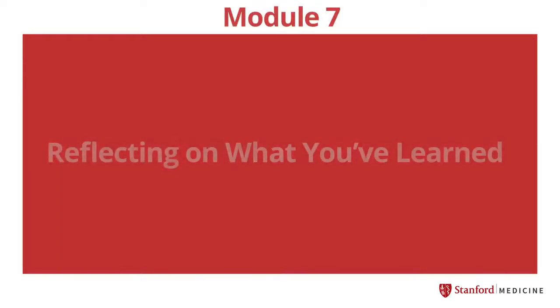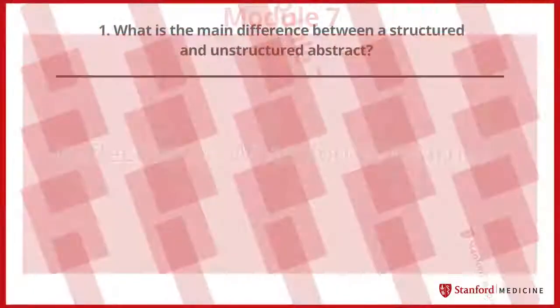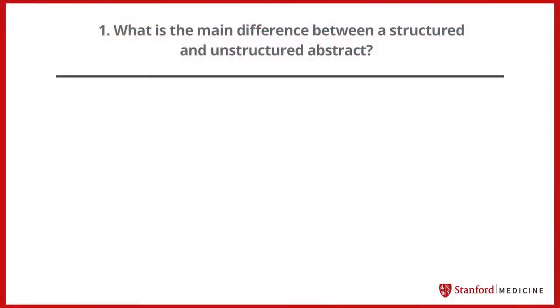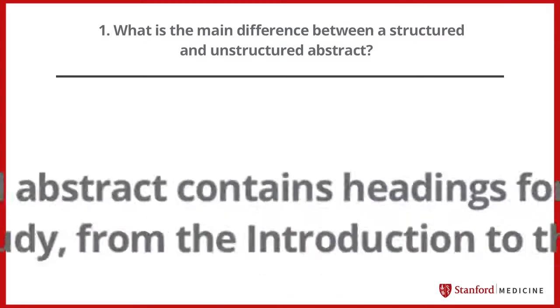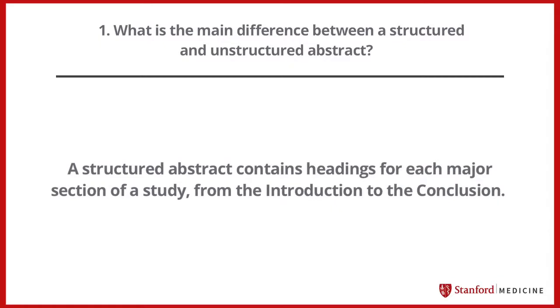Now that we've covered the fundamentals of writing an abstract and submitting it to a conference, we'll ask you to reflect on what you've learned. What is the main difference between a structured and unstructured abstract? A structured abstract contains headings for each major section of a study, from the introduction to the conclusion.